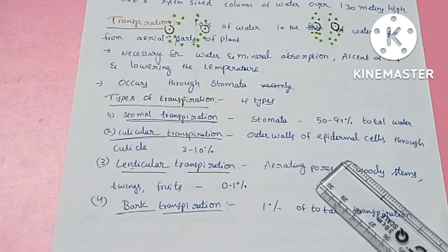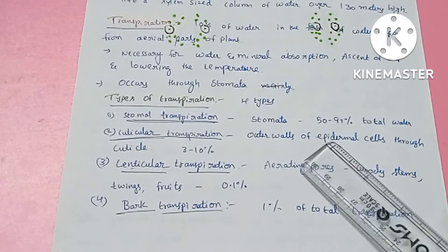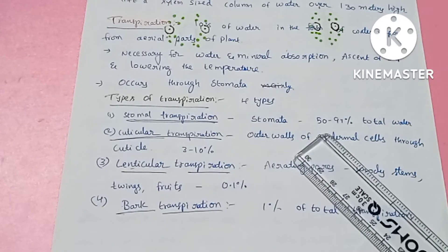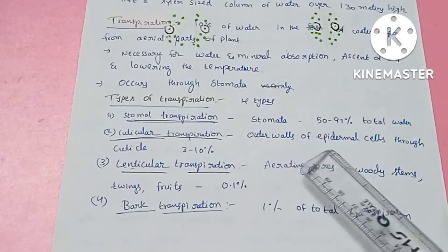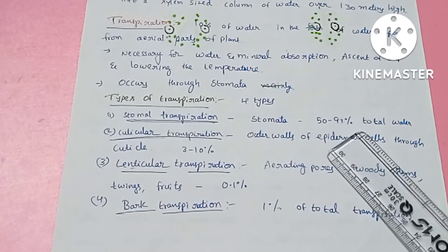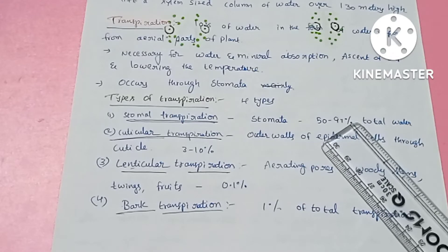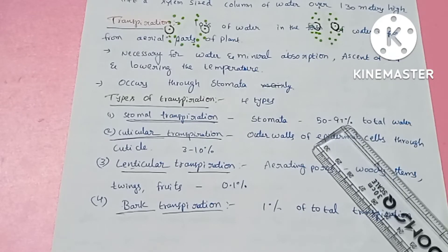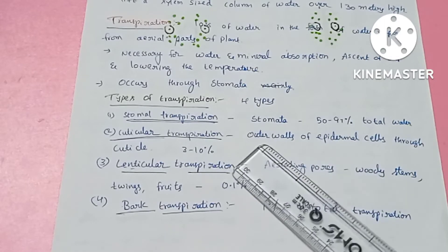Transpiration also occurs through epidermal cells and cuticles. Cuticular transpiration accounts for 3 to 10% of total transpiration.